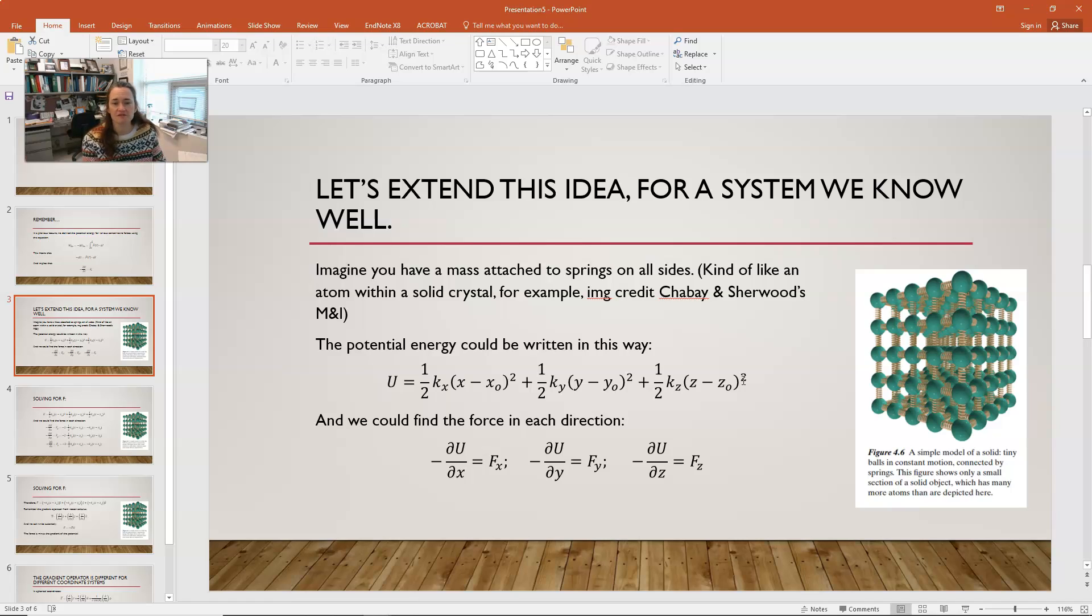And, what we would do is the x component of the force would be equal to the negative partial derivative of U with respect to x. The y component of the force would be the negative partial with respect to y. And, the z component would be the negative partial of U with respect to z. So, that's how we would find each one of the components in turn.